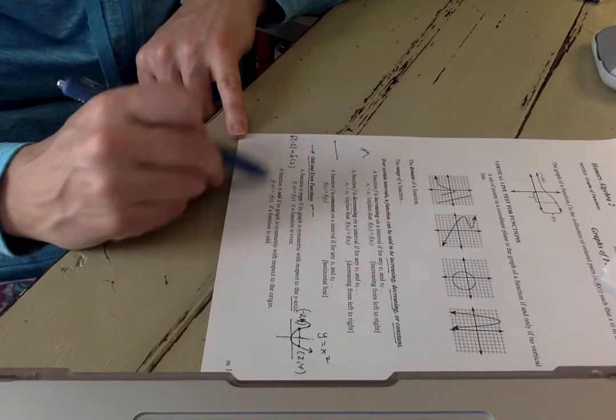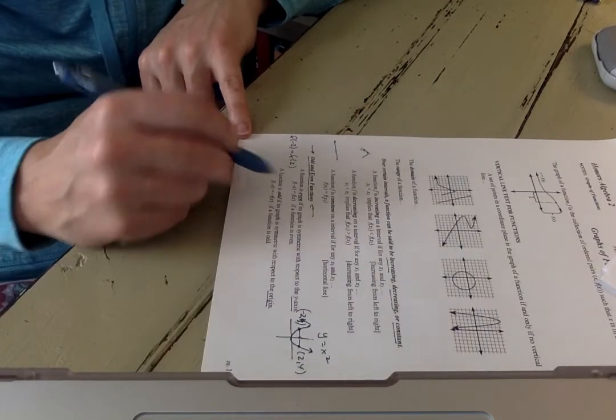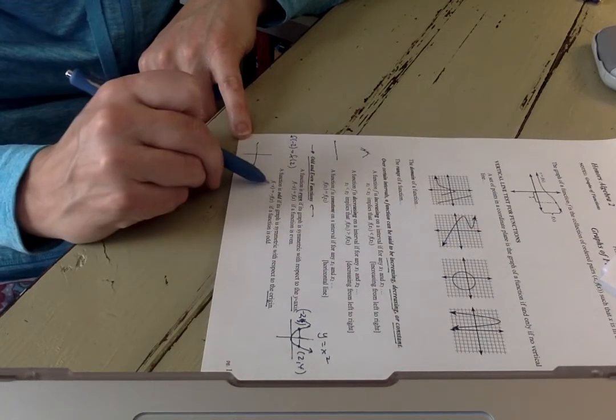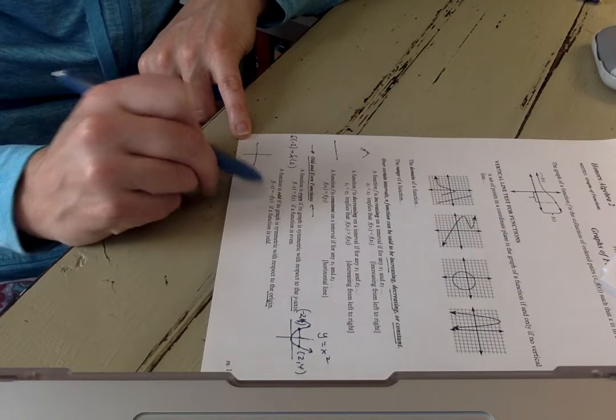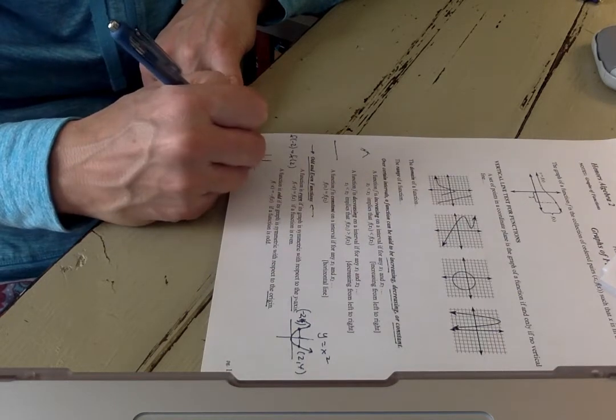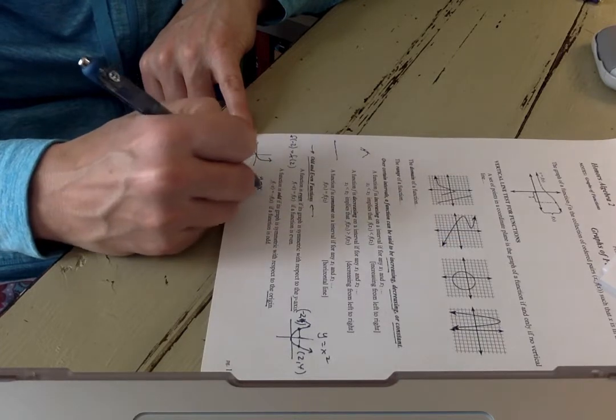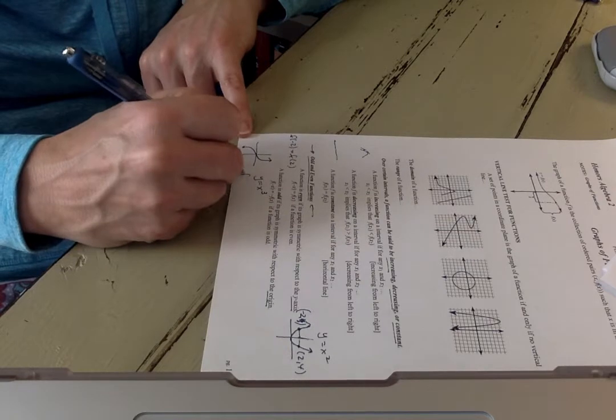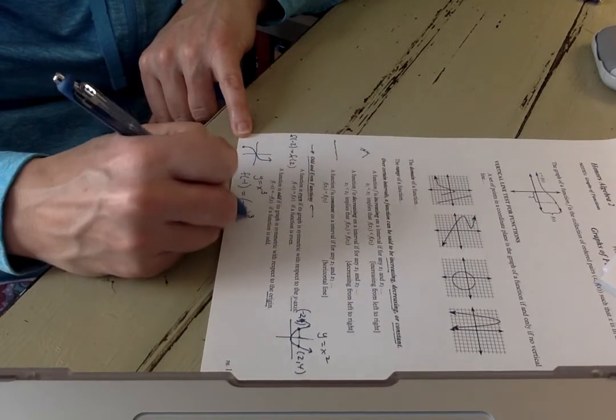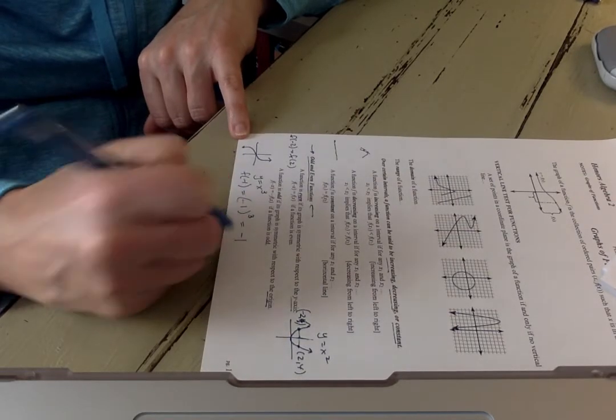Now a function is odd if it's symmetric with respect to the origin. In other words, if I plug in a negative x value, I get a negative y value. If I plug in a positive x value, I should get a positive y value. A nice function to look at is a cubic function, like y equals x cubed. So if I were to find f of negative 1, it would be negative 1 to the third power, which would be equal to negative 1.